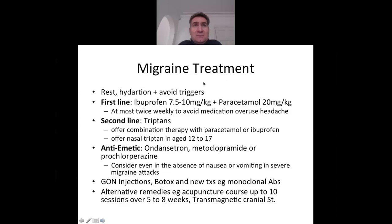For acute migraine treatment, the mainstay is rest, hydration, and avoidance of triggers. If medication is needed, first line is ibuprofen or another NSAID and paracetamol, limited to twice weekly to avoid medication overuse headache. Second line is a triptan, such as sumatriptan, which can be combined with paracetamol or ibuprofen. For faster onset of action, a nasal triptan can be used. An antiemetic — such as ondansetron, metoclopramide, or prochlorperazine — is recommended if the child is nauseous or vomiting, and can also be considered in very severe migraines even without nausea.